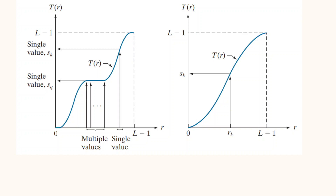Consider the graph given here to understand the meaning of a monotonically increasing function and single-valued. In this graph, S is a function of R, where R represents the intensity value of the input image. Along the x-axis we have R and along the y-axis we have S, where S represents the intensity value of the output image. Both graphs shown are monotonically increasing functions. The first one is a monotonically increasing function with many-to-one mapping — for multiple inputs you have a single output SQ. The second graph is a monotonically increasing function with one-to-one mapping, where a single input RK is mapped to a single output SK.